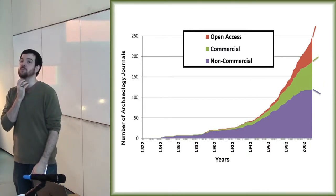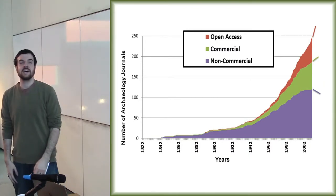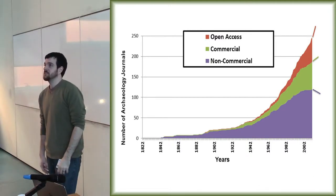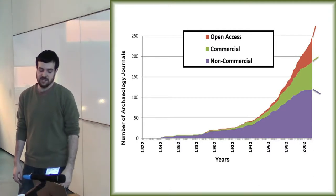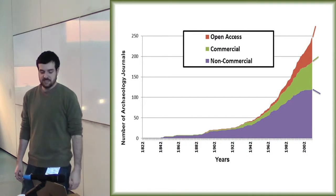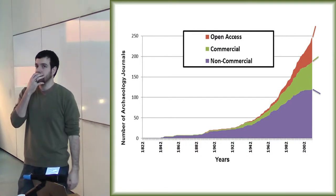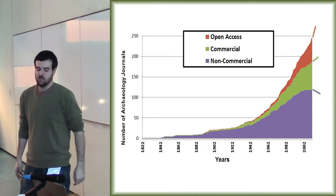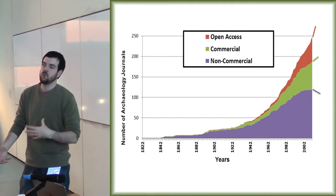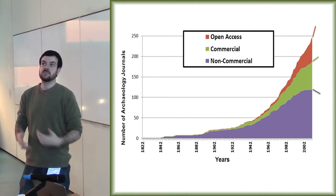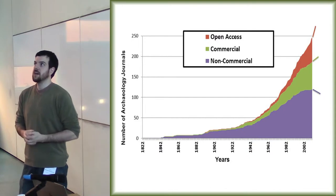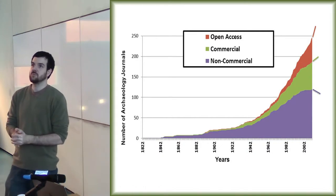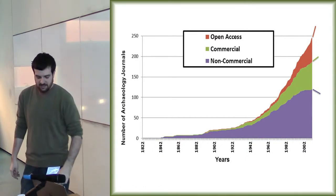We've also seen the growth go up. I presented this graph at the Southampton CAA, and it's changed dramatically. Open access has expanded quite a bit. Commercial publishing has also gone up. Non-profit publishing has actually gone down, as more of them are being taken over by commercial entities. We're starting to see the world of archaeology publishing split into two directions: one is the open access direction, and one is more commercial publishing. Many small independent publishers and societies are either going with a commercial entity or going open access.